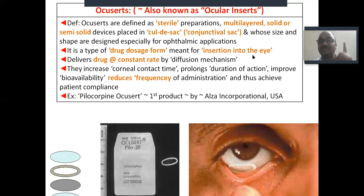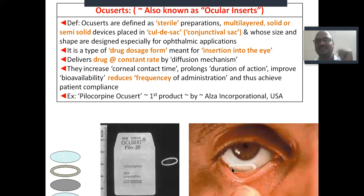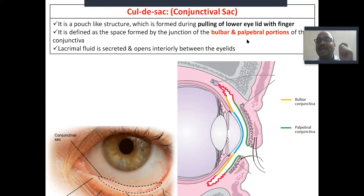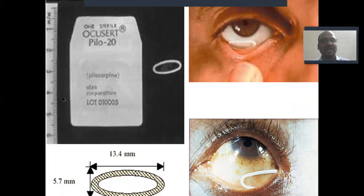Instead of putting drops every hour, the accusert remains two to three days in the eye itself — it is much better. The cul-de-sac is the area between the bulbar and the palpebral conjunctiva. When you pull the lower eyelid down, you get a pouch-like structure — that is the cul-de-sac or conjunctival sac — and the accusert is inserted there. The accusert shown here is size 13.5mm in length and height.